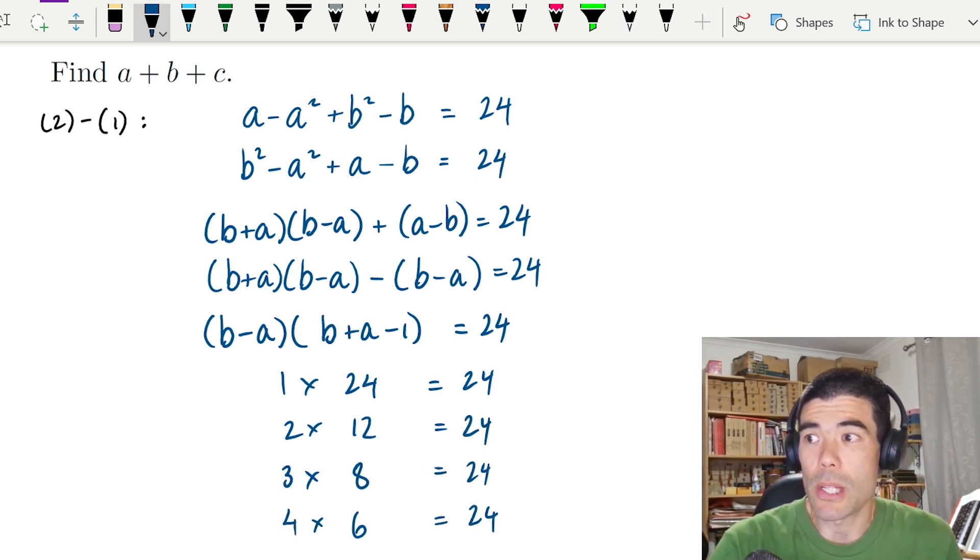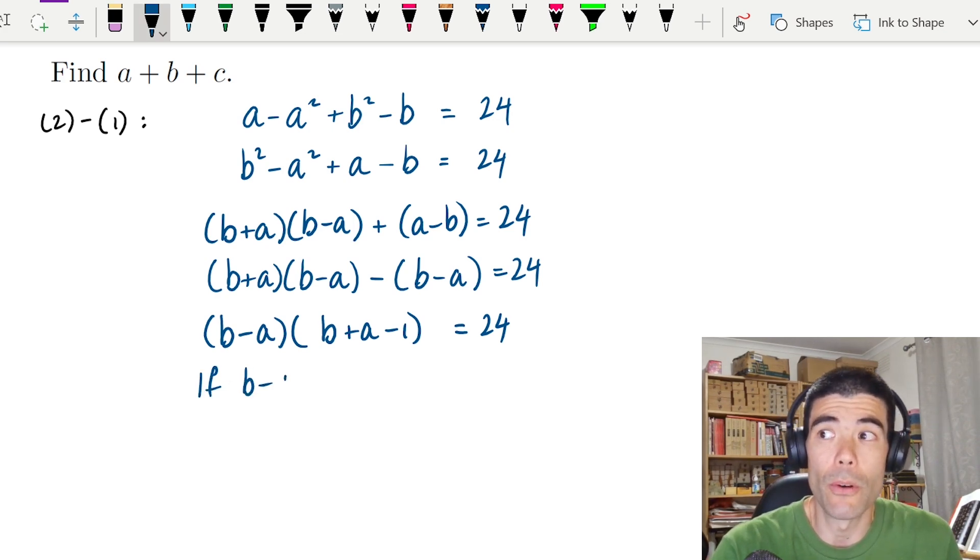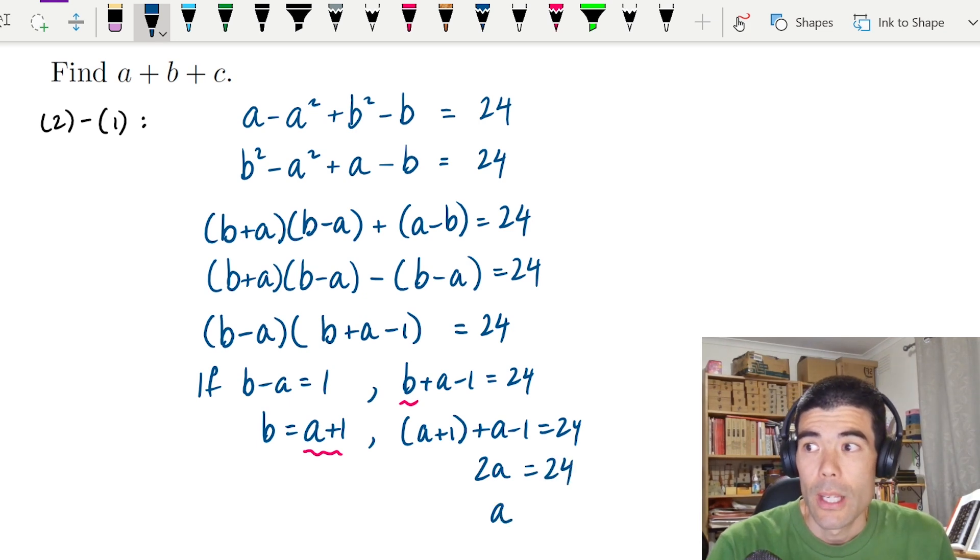Let's check the first one. Say if b minus a equals 1, then b plus a minus 1 is 24. We can tell that second bracket is going to be the larger of the two factors because a is going to be at least 1. So b would be a plus 1. We can substitute that into the second equation to get 2a equals 24. Then a would have to be 12. That would mean b would have to be 13.